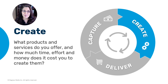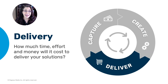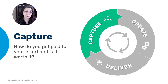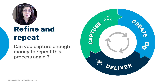The first part of an evolving business model is to create — which refers to your solutions like your products and services. The question is: what products and services do you create, and how much time, effort, and money does it cost you to create them? Next is delivery: how do you deliver your solutions to people who need them, and how much time, effort, and money will it cost? Which leads to the last part — getting paid. How do you get paid for your effort, and is it really worth it? How much do you charge, and can you still make a profit after you've spent all that time, money, and effort creating and delivering your solutions?